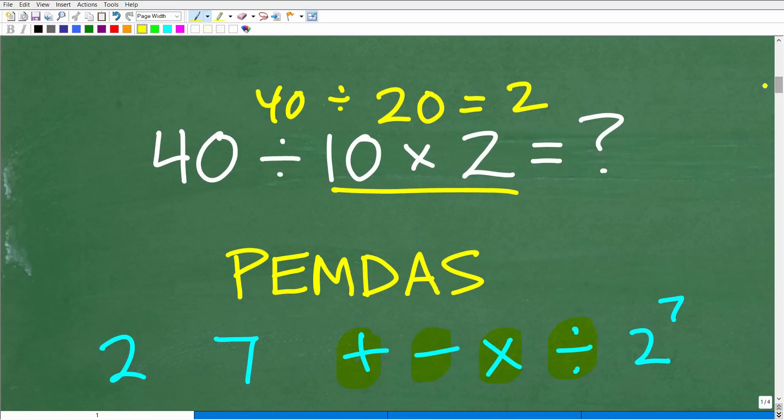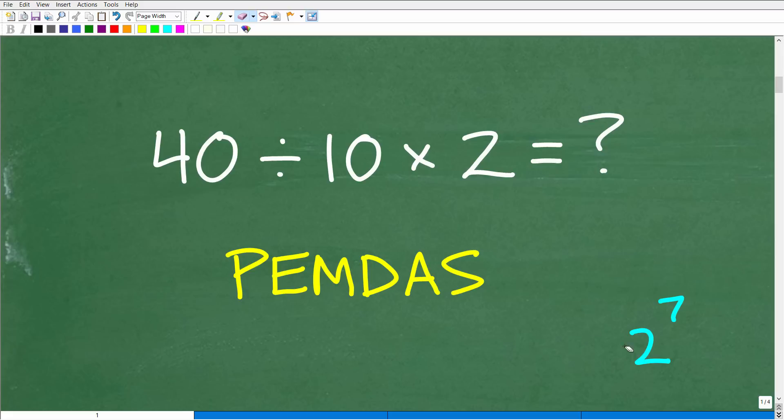Now, why is doing multiplication wrong here? Why should I have to do division first? Well, this is why we need to understand the correct order of operations.